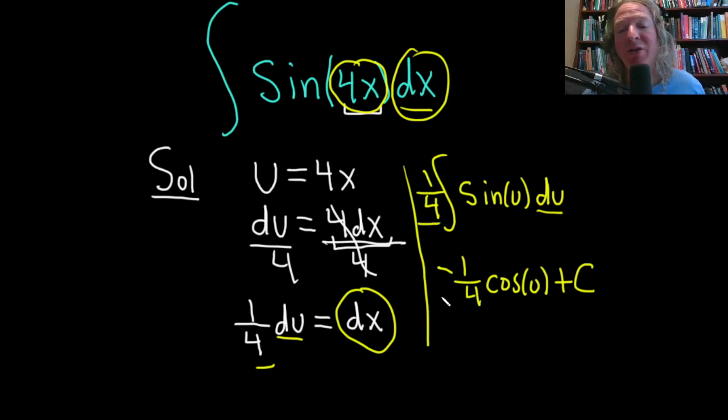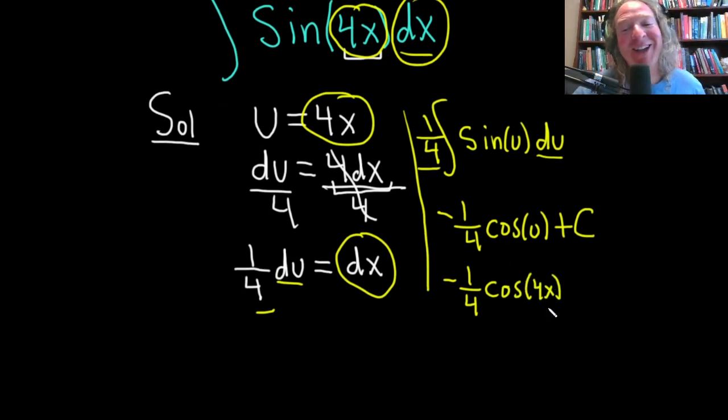We're not done though, right? Because we have to go back to our original variable in the problem, which was x. Our u is 4x. So in the next step, all you do is simply come back here to where the u is and put the 4x. And don't forget the plus C, which is your constant of integration.